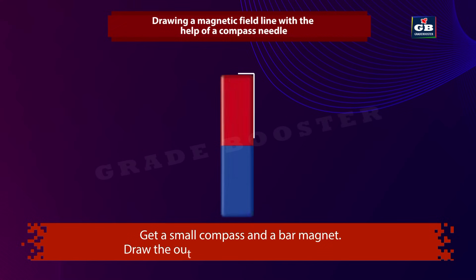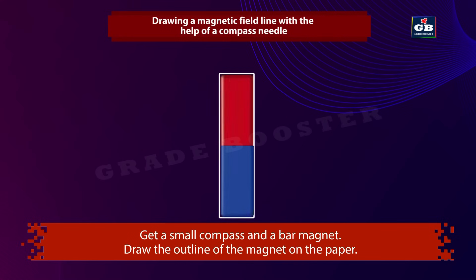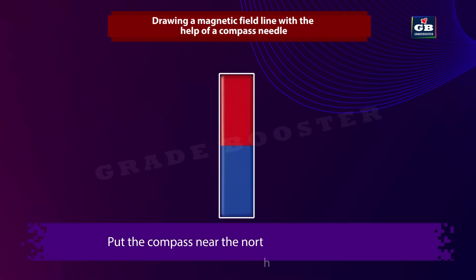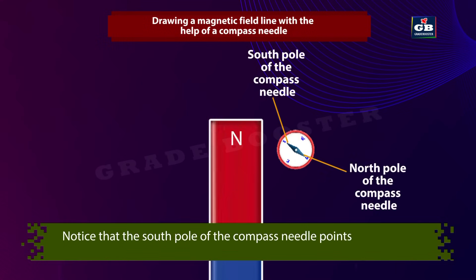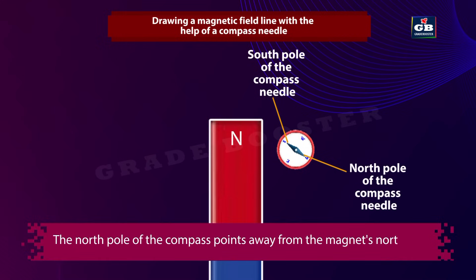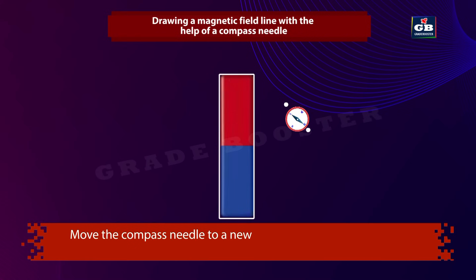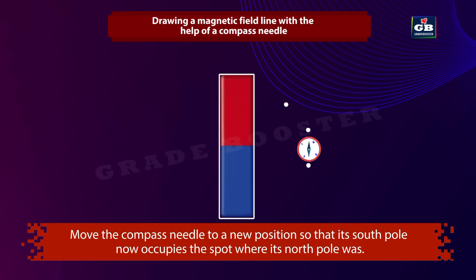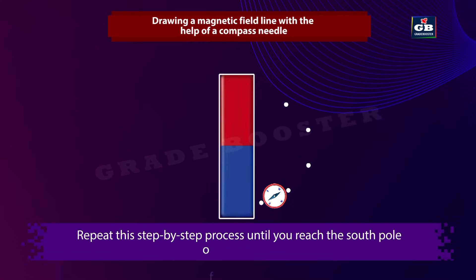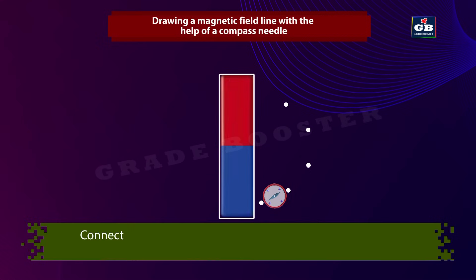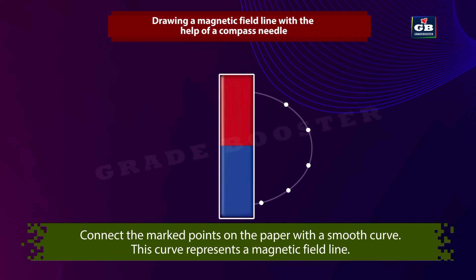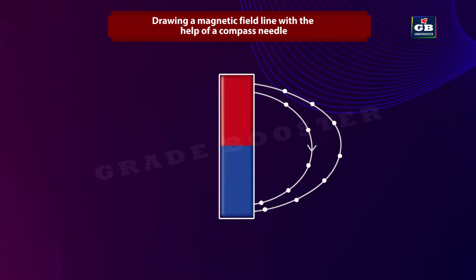To draw a magnetic field line using a compass needle: get a small compass and a bar magnet, and draw the outline of the magnet on paper. Put the compass near the north pole of the magnet. The south pole of the compass needle points towards the north pole of the magnet. Mark the positions of both ends of the needle. Move the compass so its south pole occupies where the north pole was. Repeat until you reach the south pole, then connect the marked points with a smooth curve to represent a magnetic field line.